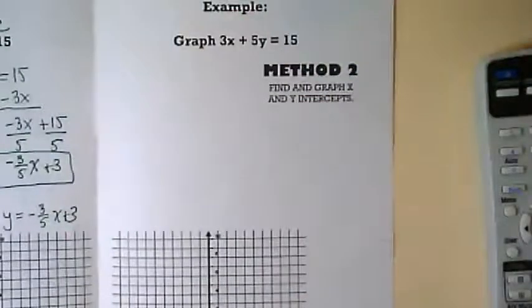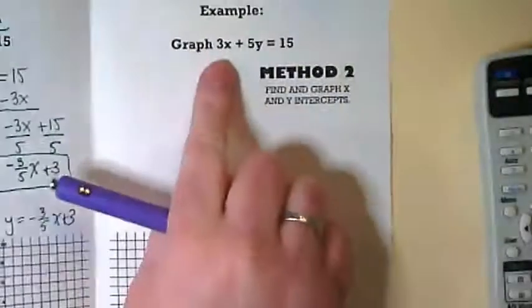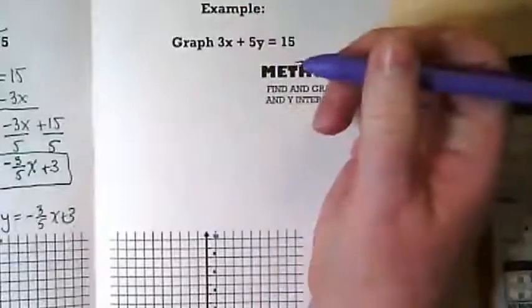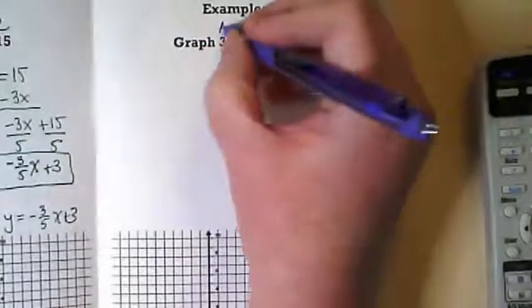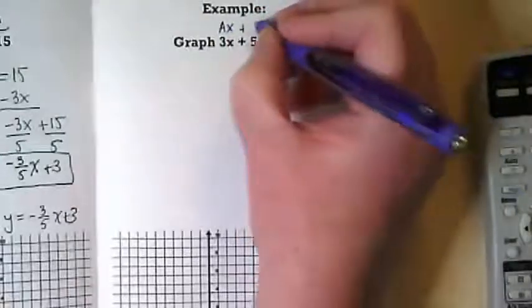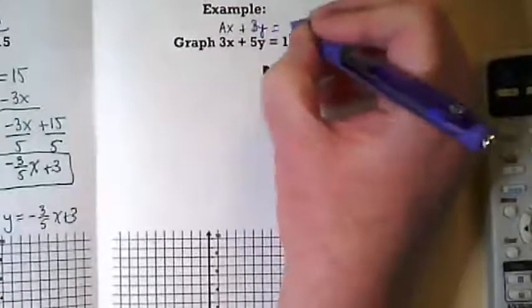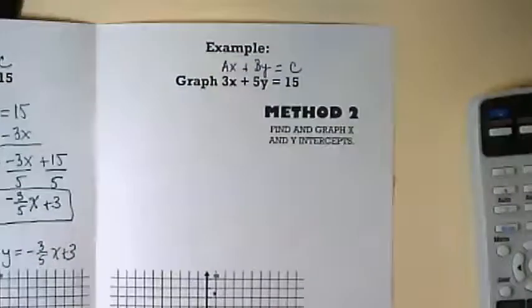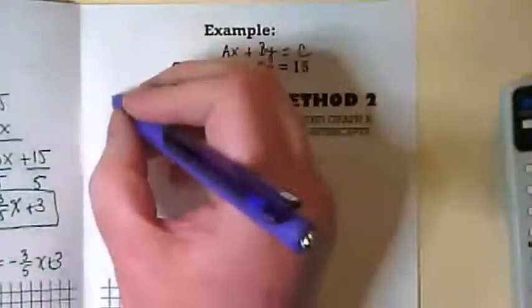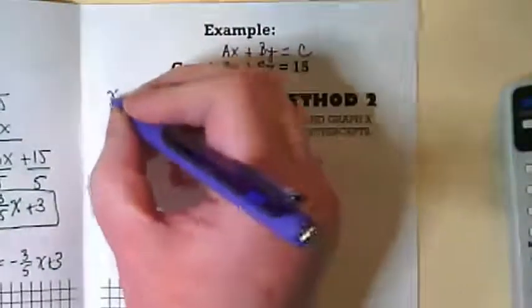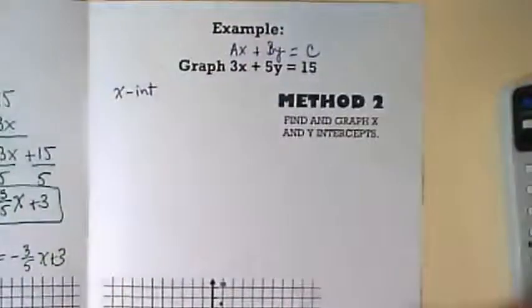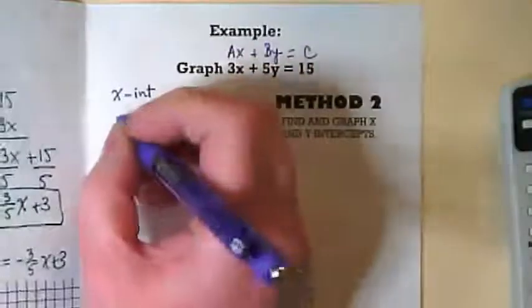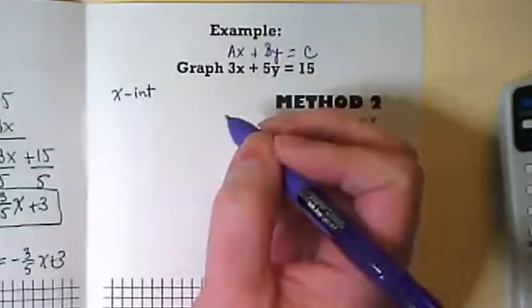So we're using the same equation as yesterday. 3x plus 5y equals 15. That means our graph should look the same if we do this correctly. And again, this is ax plus by equals c. So let's make more notes than I normally would. We're going to find the x-intercept first.